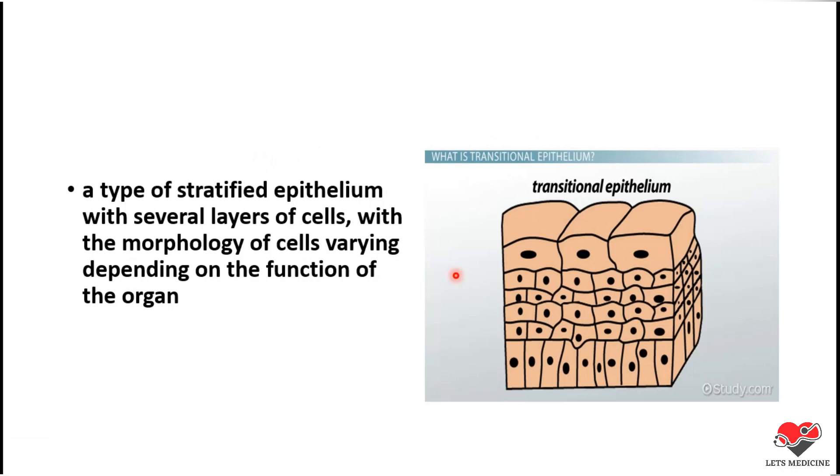Transitional Epithelium is a very special type of epithelium. It is a stratified epithelium made up of several layers of cells. However, the special point about this epithelium is that the shape or morphology of the cell is not consistent.